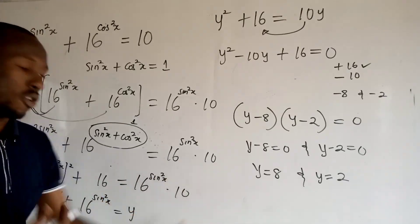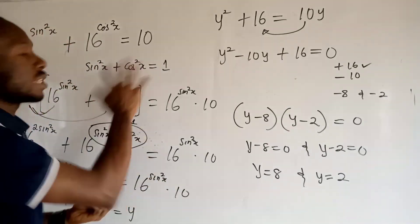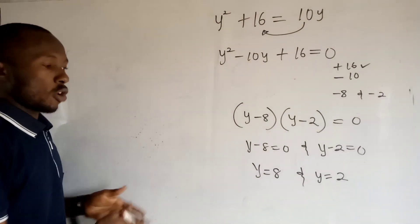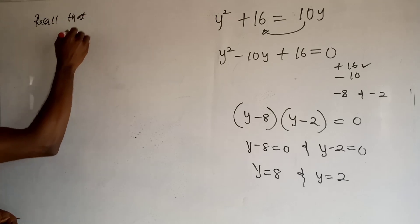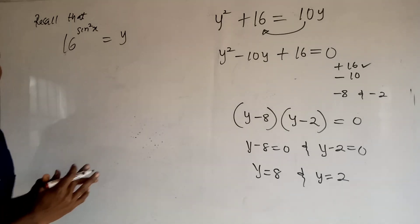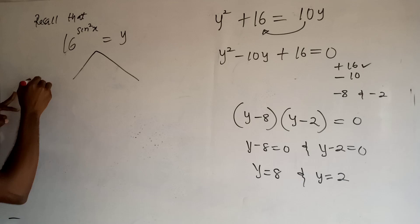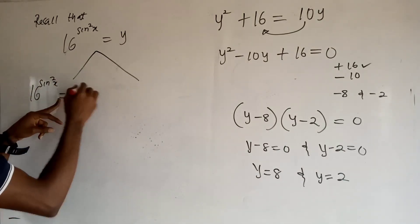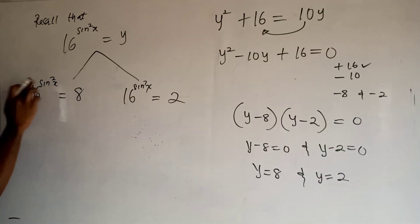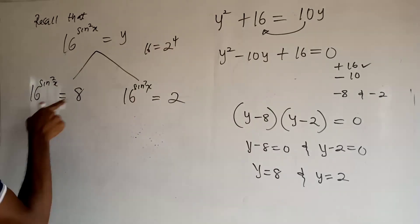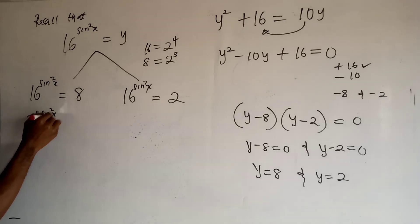Now, remember we said let 16 to the power sin squared x equal y. We have two values for y: 8 and 2. For the first case, 16 to the power sin squared x equals 8. Since 16 equals 2 to the power of 4 and 8 equals 2 to the power of 3, we substitute: 2 to the power 4 sin squared x equals 2 to the power 3. The bases cancel, giving 4 sin squared x equals 3.